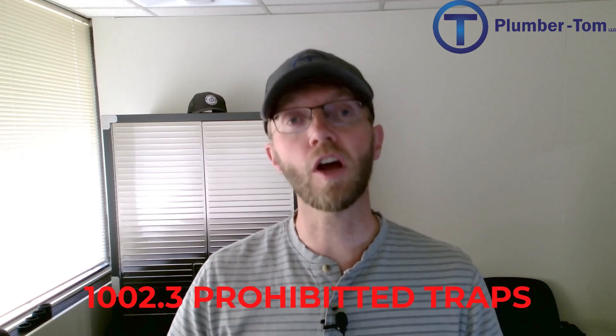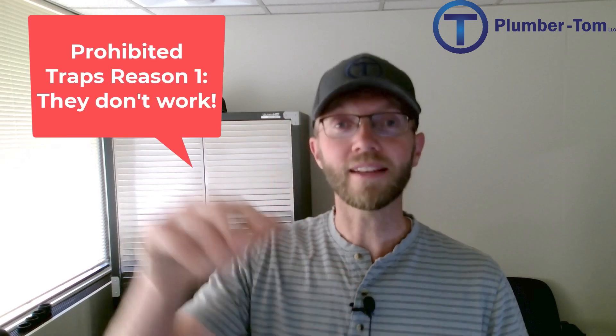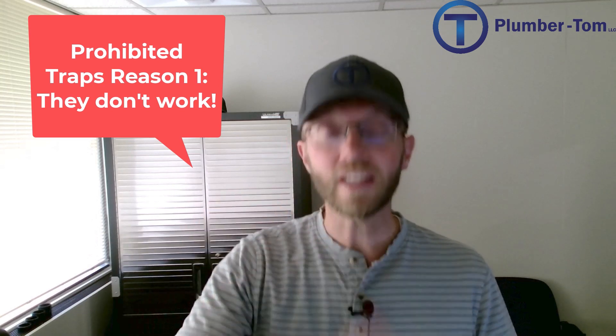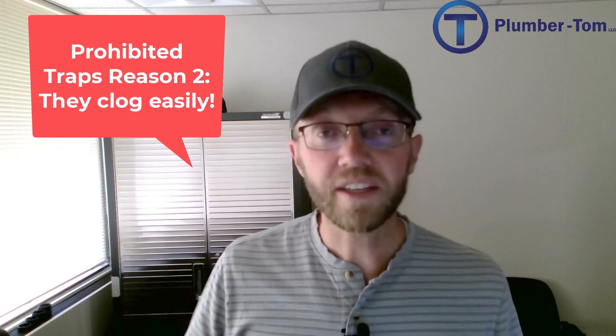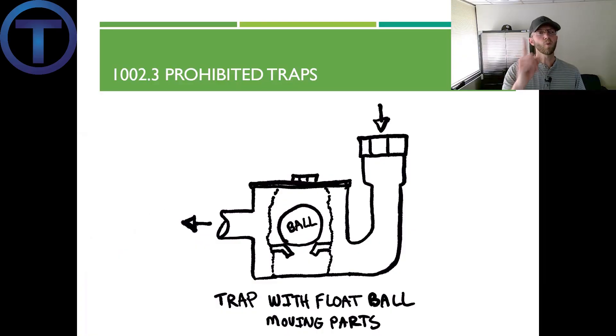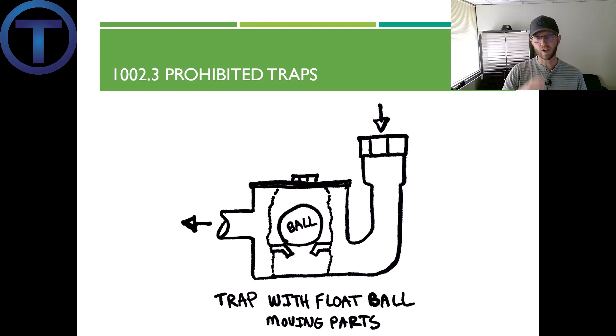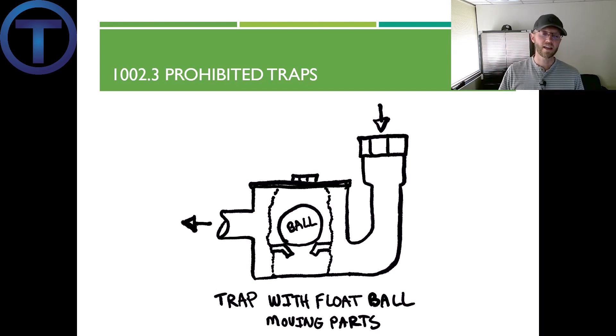In section 1002.3, we look at prohibited traps — traps that you should not ever install. There are two reasons these are not allowed. One reason is because they don't work: they get siphoned out, they don't create a seal, and they allow sewer gases to come through. The other reason is that they get clogged really easily. Prohibited trap number one: traps that depend on moving parts to maintain the seal. This design used a floating ball that would go up as liquid moved through and sink down to create a seal when the liquid was gone — clearly something that could be clogged easily. This one's out.